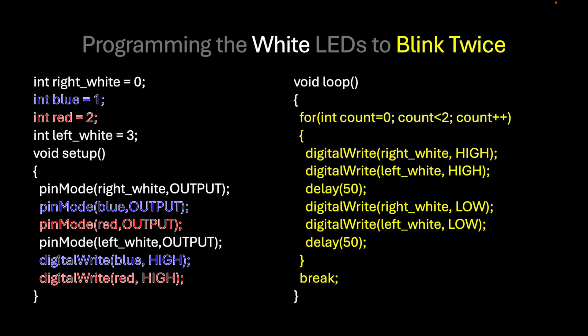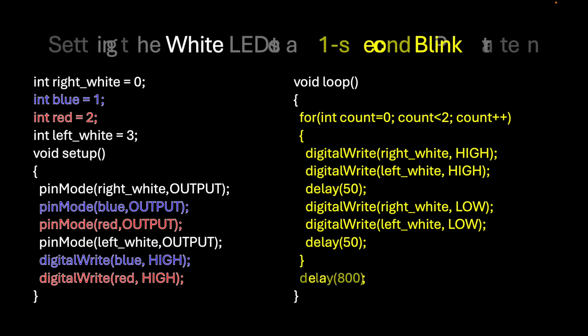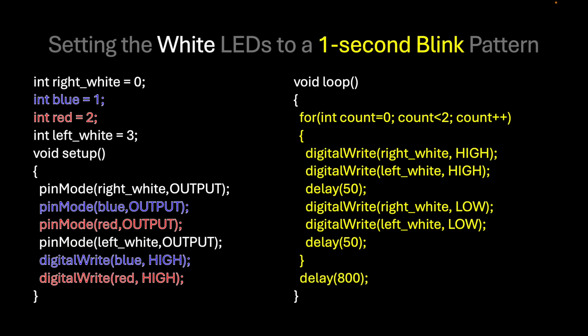The break at the end of the program means that after it has blinked twice, it will no longer turn on. The lights blink every second. Since 50 milliseconds multiplied by 2 equals 100 milliseconds, and using a for loop it totals 200 milliseconds, the delay at the bottom is 800 milliseconds. This totals a loop cycle of exactly 1000 milliseconds or 1 second. That's how easy it is to blink the white lights like that of an airplane.